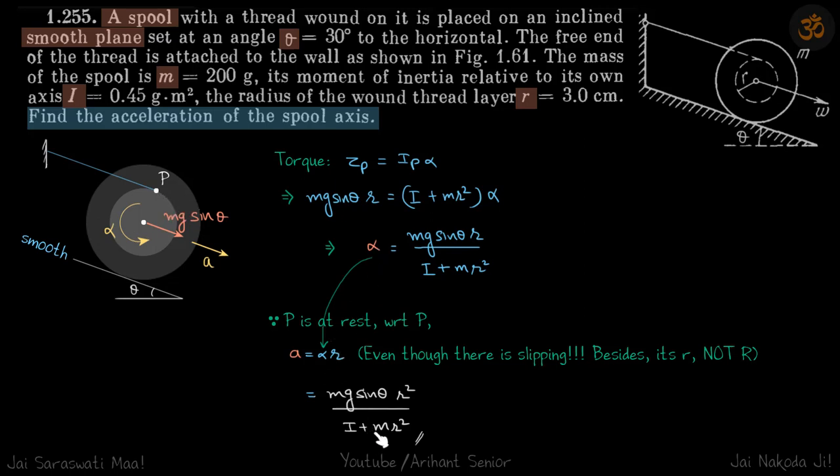Now, a equals αr is not our usual αr here. Even though there is slipping, we have a equals αr. Besides, it's small r, not capital R. Here the r is this radius small r, not this radius. We are familiar with this equation when generally there is rolling, but that is not the case here. We have slipping here, right?